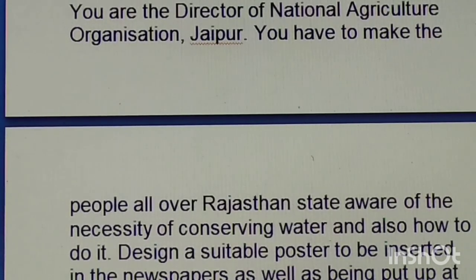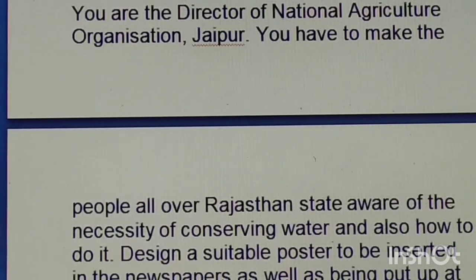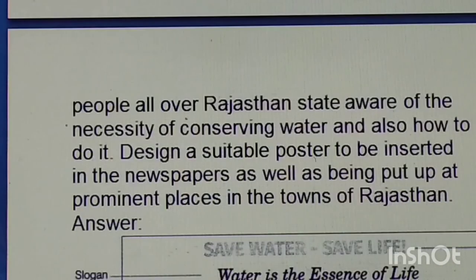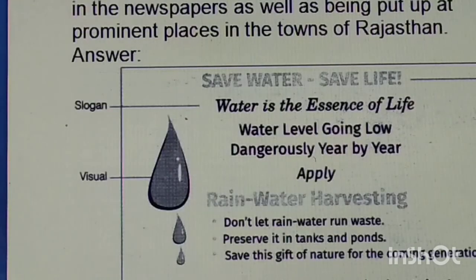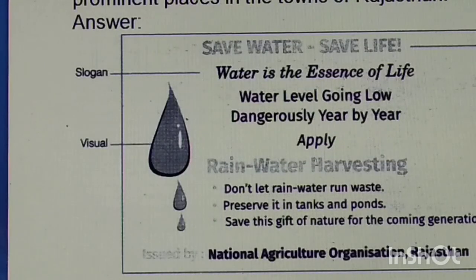You are the director of National Agriculture Organization, Jaipur. Make people across Rajasthan aware of the necessity of conserving water and how to do it — design a suitable poster. Answer: 'Save Water, Save Life — Rain Water Harvesting, very much required as the need of the hour.' Issued by National Agriculture Organization, Rajasthan.